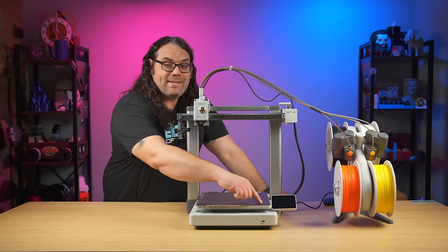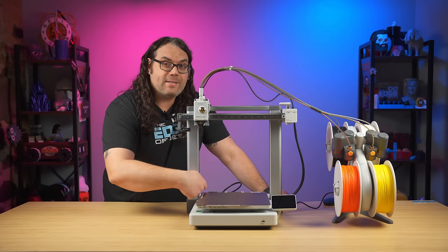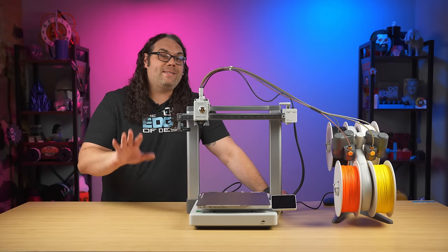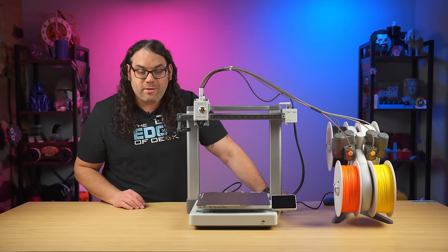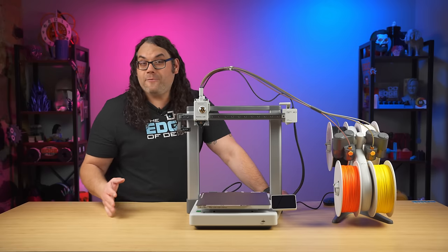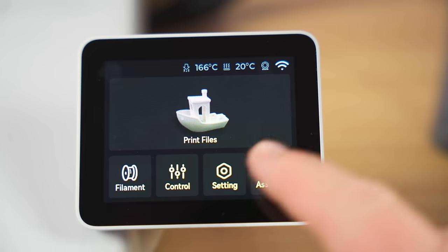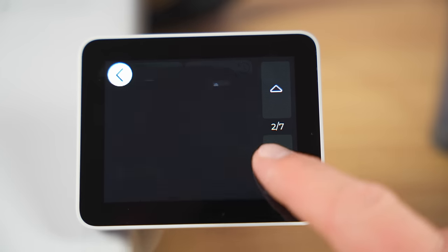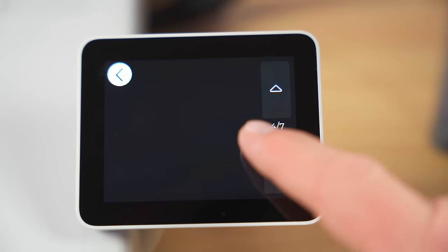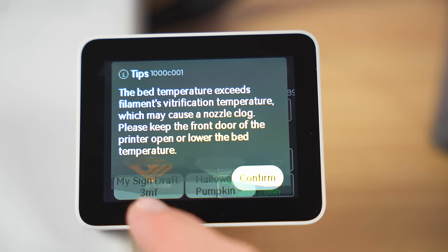So the A1 actually has a 256 by 256 by 256 square build area. And that's the same as we see on all their other printers except for the A1 mini. In freedom units, that's about 10 inch squared. A 3.5 inch IPS touchscreen controls the whole machine. It's very responsive and allows me to move through the menus and make selections pretty easy.